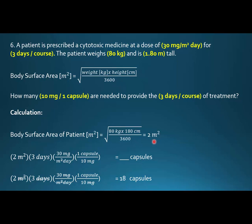Since capsules is what we're looking for at the end, we begin with one capsule over 10 milligrams as our conversion. We need something to cancel the milligrams, so we use 30 milligrams per meter squared per day. We have two denominators — meters squared and day — so we use the 2 meters squared body surface area we calculated and the number of days to cancel them. After diagonally crossing off milligrams, days, and meters squared, we're left with just capsules. The answer is 18 capsules.